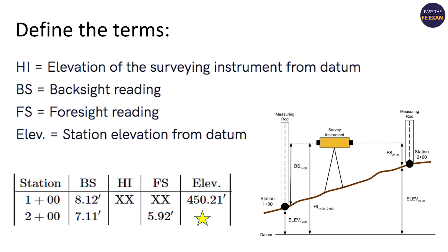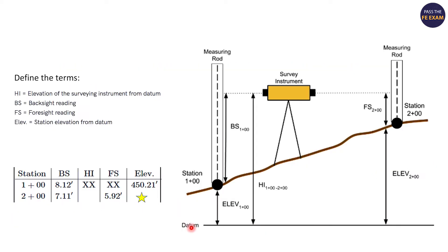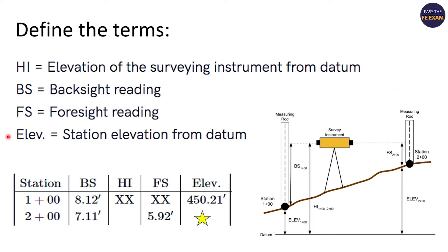Firstly, I'd like to define the terms. HI is the elevation of the surveying instrument from the datum. The datum is your base elevation — essentially sea level, but let's call it 0. Your BS is your back sight reading, which is the reading from the ground at station 1 to the height of the instrument. Your foresight reading is the distance from the ground at the FS station 2+00 to your height of instrument. And elevation just indicates whatever elevation they're referring to, such as elevation at 2+00.